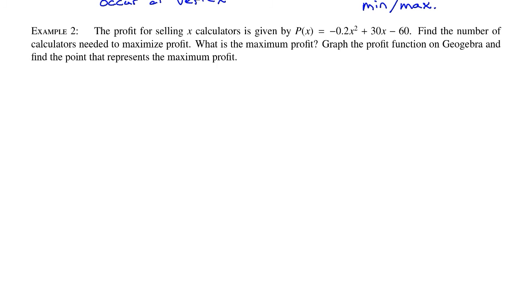Let's look at example number two. The profit for selling x calculators is given by P(x) = -0.2x² + 30x - 60. Find the number of calculators needed to maximize profit. What is the maximum profit? Graph the profit function in GeoGebra and find the point that represents the maximum profit. I'll let you do the GeoGebra part on your own so that you can get some familiarity with that. But first we want to recognize sort of the thought process to this. Now, we pretty much know what we're going to do because of what we're doing in this section. But on a test when this may be just sort of thrown at you, you have to reason through this.